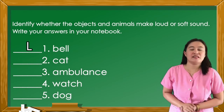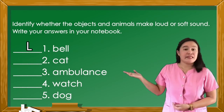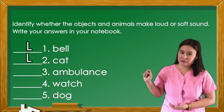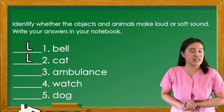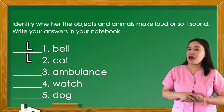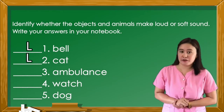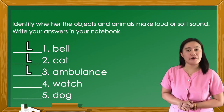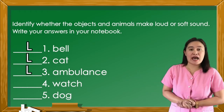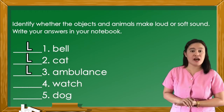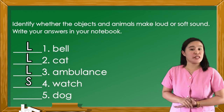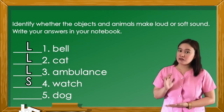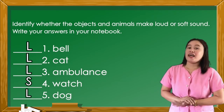Number two, cat. The cat has a loud sound and the answer is L. Number three, ambulance. The ambulance has a loud sound and the answer is L. Number four, watch. The watch has a soft sound and the answer is S. Number five, dog. The dog has a loud sound. The answer is L.